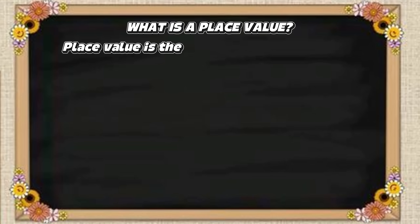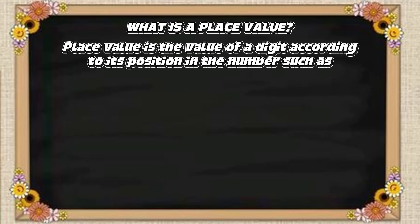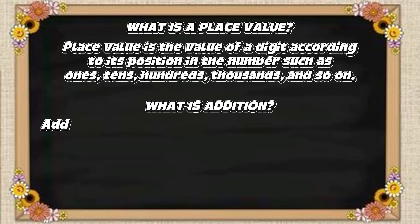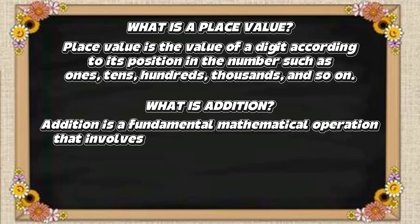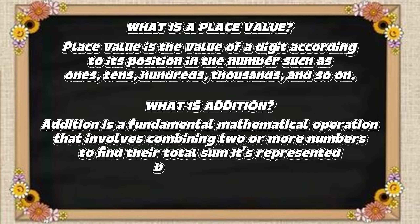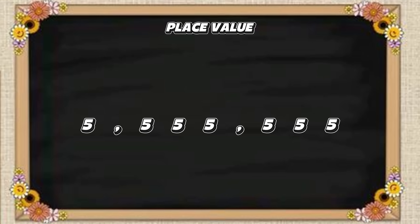Place value is the value of a digit according to its position in the number, such as ones, tens, hundreds, thousands, and so on. On the other hand, what is addition? Addition is a fundamental mathematical operation that involves combining two or more numbers to find their total sum. It's represented by the plus sign.